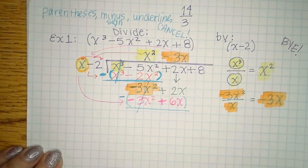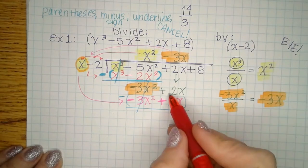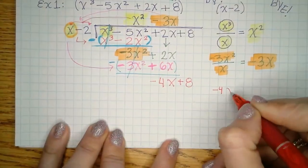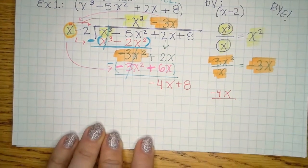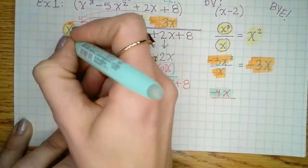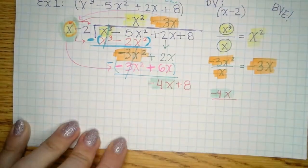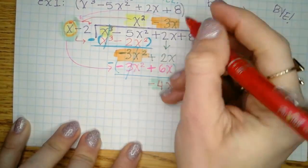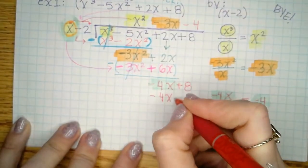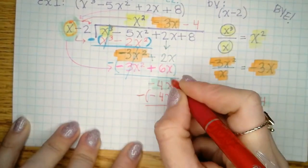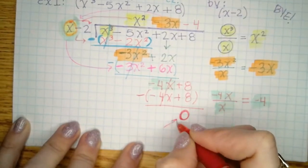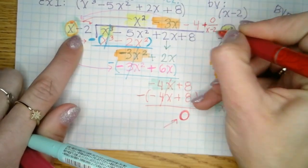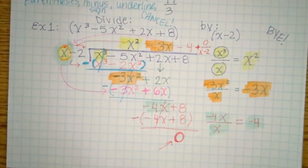2x minus 6x is negative 4x. Bring down the plus 8. Divide negative 4x by x — you always divide by the leader on the outside — giving negative 4. Write that on top. Multiply negative 4 by the whole outside: negative 4x plus 8. Apply parentheses, minus sign, underline, cancel: 8 minus 8 is 0. No remainder. If the remainder is not zero, you'd write plus that remainder over x minus 2. That's long division of polynomials in a nutshell.